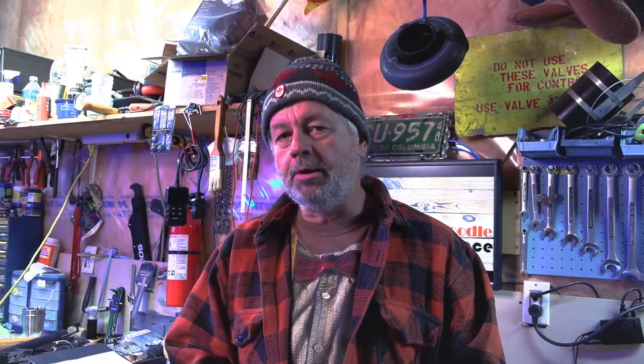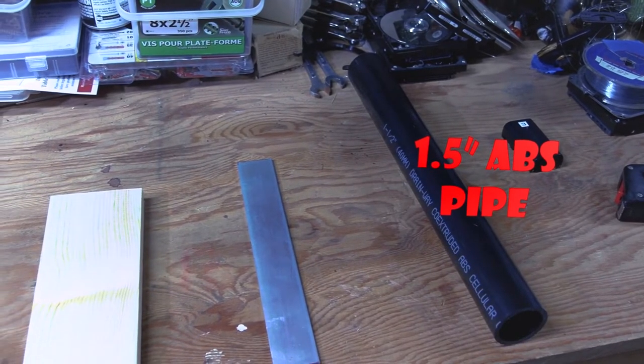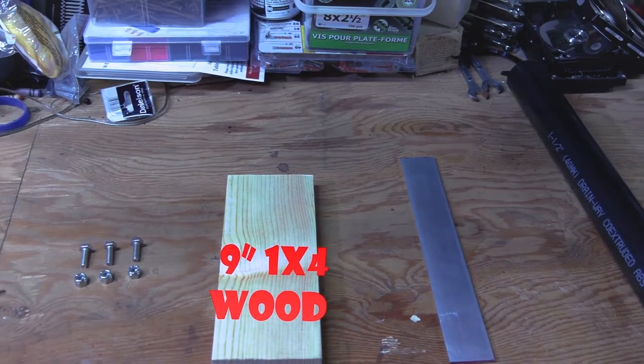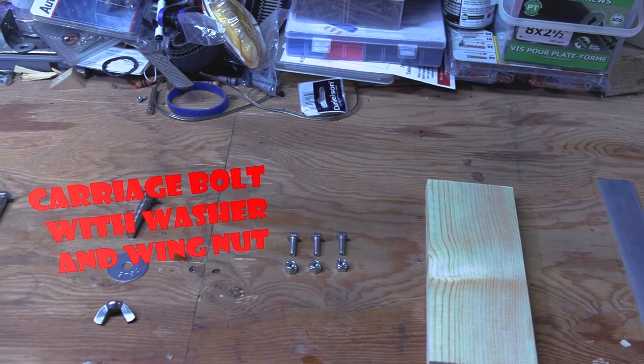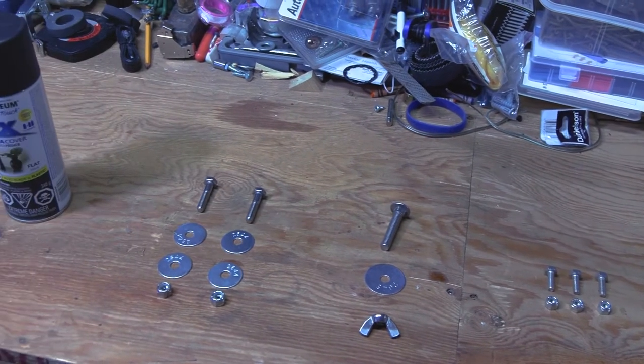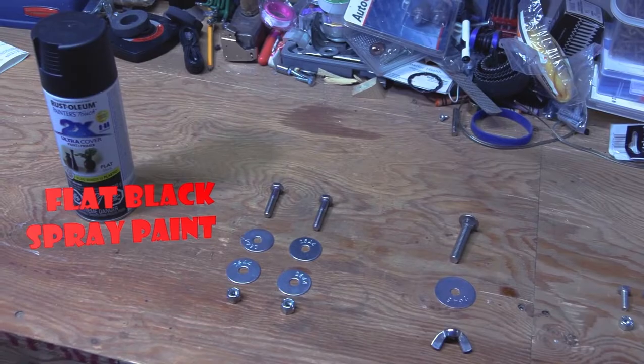To build this thing, here's what you're going to need to get from the hardware store. And by the way, I'm not plugging any particular hardware store, let's just say this one happens to rhyme with Rome Jeepo. I put a list in the description so you don't need to write this down. You will need one piece of one and a half inch ABS plastic pipe, one piece of one and a half inch wide aluminum bar, a nine inch piece of one by four wood, three three-sixteenths inch bolts three quarter inches long, a five-eighths inch carriage bolt with washer and wing nut, two five-sixteenths inch bolts with washers and nuts, and some flat black spray paint.